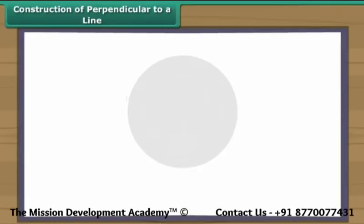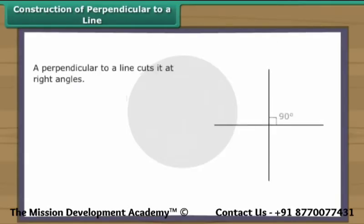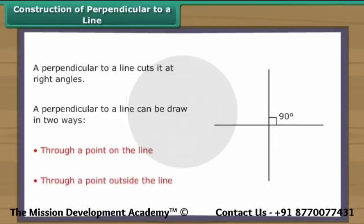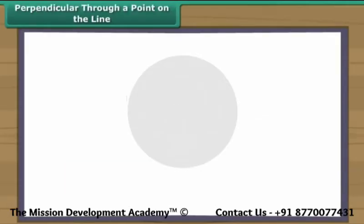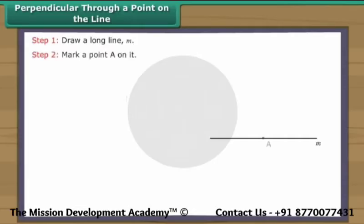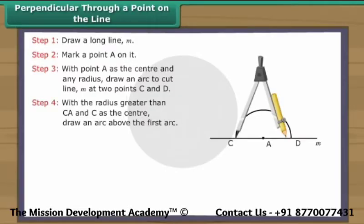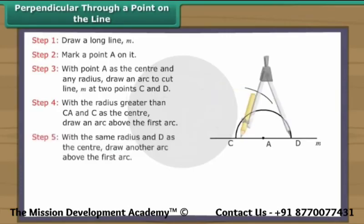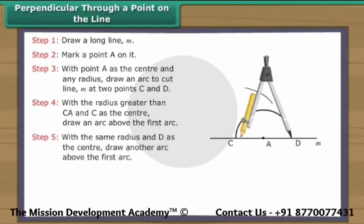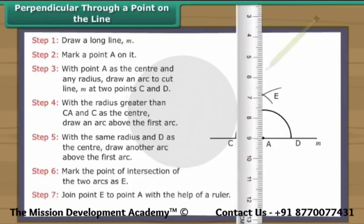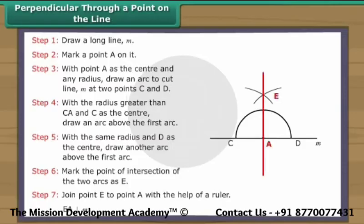Construction of perpendicular to a line. A perpendicular to a line cuts it at right angles. A perpendicular to a line can be drawn in two ways: through a point on the line, or through a point outside the line. Perpendicular through a point on the line: Draw a long line M and mark a point A on it. With point A as the center and any radius, draw an arc to cut line M at two points C and D. With a radius greater than CA and C as the center, draw an arc above the first arc. With the same radius and D as the center, draw another arc above the first arc. Mark the point of intersection of the two arcs as E. Join point E to point A. EA is perpendicular to line M.